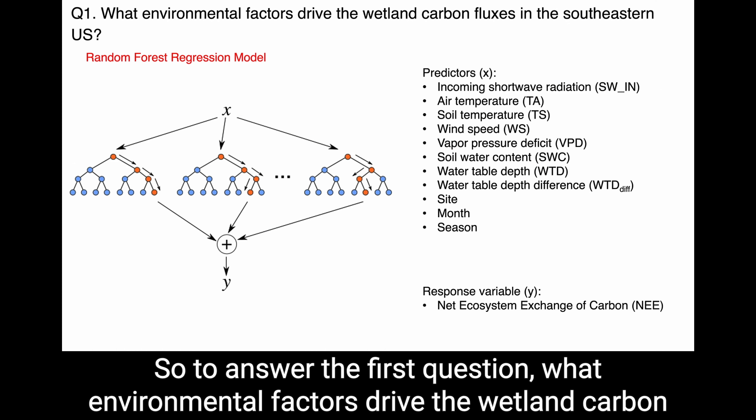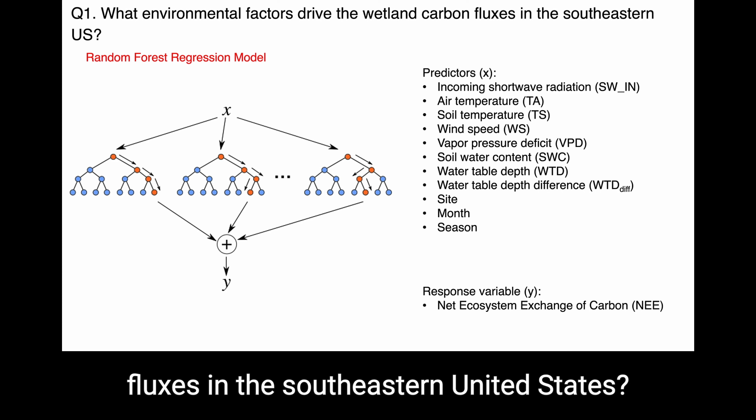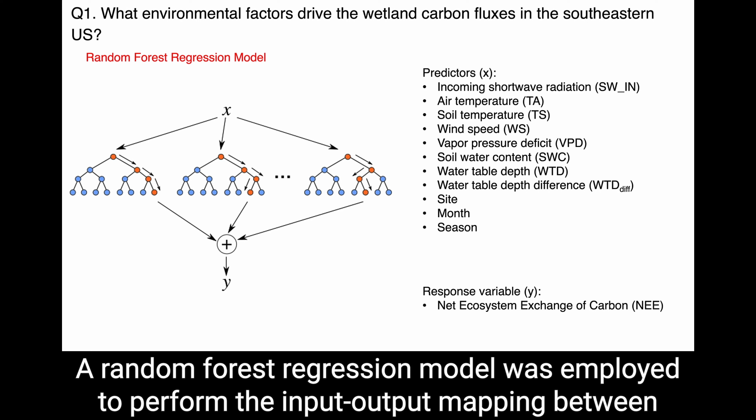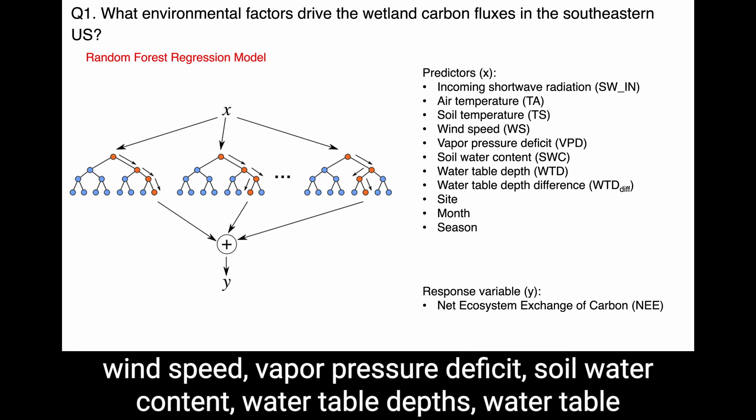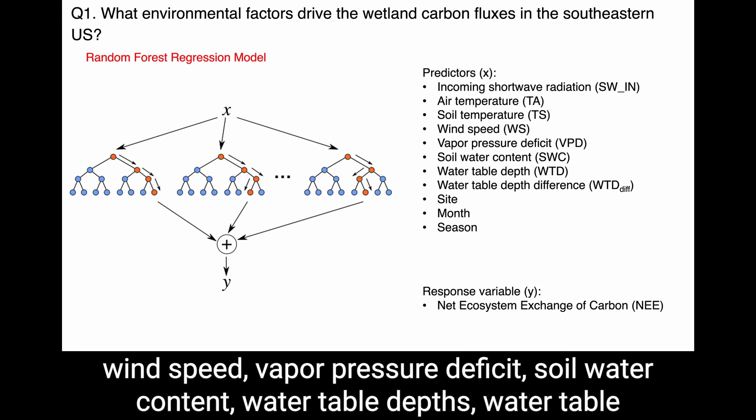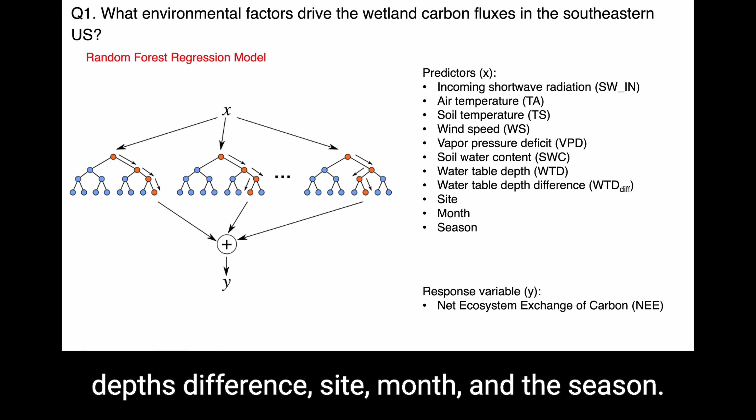To answer the first question — what environmental factors drive the wetland carbon fluxes in the southeastern United States? — a random forest regression model was employed to perform the input-output mapping between the predictors and the response variable. Predictors include incoming shortwave radiation, air temperature, soil temperature, wind speed, vapor pressure deficit, soil water content, water table depth, water table depth difference, site, months, and season.